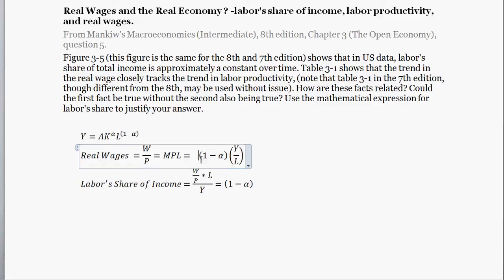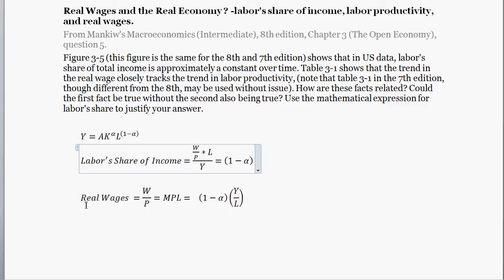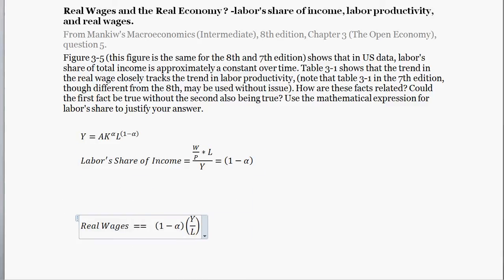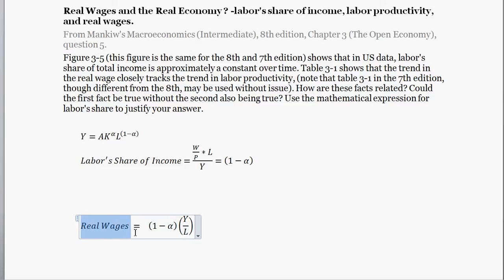So this has stayed constant. If we care about real wages, and labor share stays roughly constant, that would suggest that real wages are really a function of changes in Y divided by L — output divided by labor. That's kind of like per capita output, or average income, average output. Another way to think of this is average productivity: how much production, on average, you're able to get from each worker. Given that (1 minus alpha) is constant, we expect that changes in real wages would be proportional to changes in average productivity.